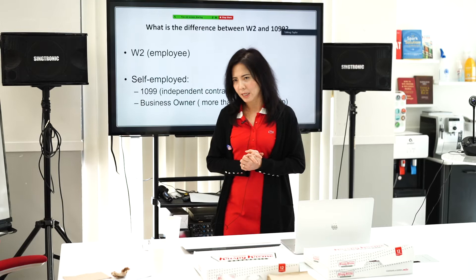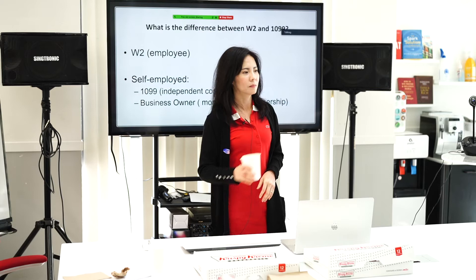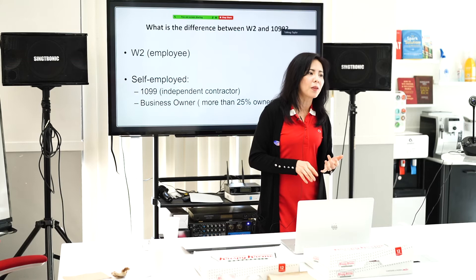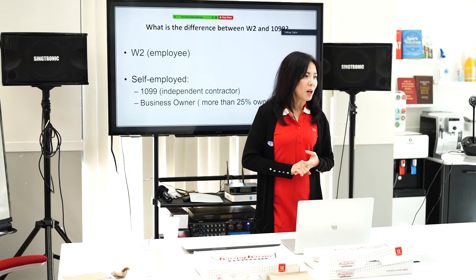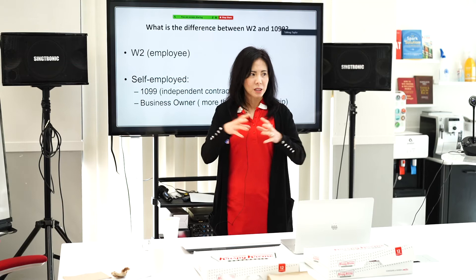But how about 1099? It's for independent contractors — for example, people working in insurance are 1099s. So 1099 is for independent contractors. Who are they? Real estate agents, insurance agents, a lot of people doing independent contractor work. They also receive the 1099 at the end of the year.